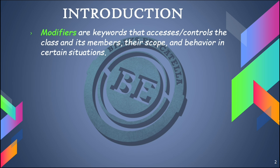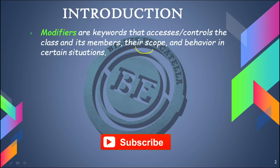Now let us take a quick introduction of modifiers. What are the modifiers? Modifiers are the keywords that access or control the classes and their members — their scope and behavior in certain situations. The main aim of modifiers is to control the class and its members. These modifiers are divided into two types: access modifiers and non-access modifiers.